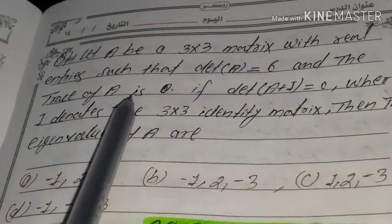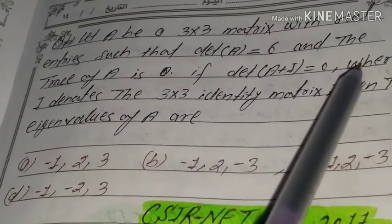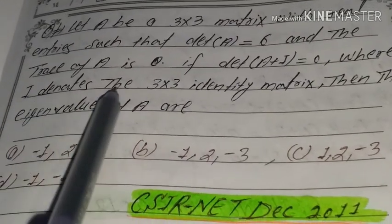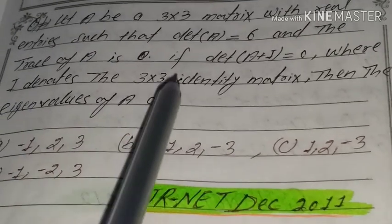And the trace of A is 0. If determinant of A plus identity is equal to 0, where I denotes the 3x3 identity matrix, then the eigenvalues of A are.